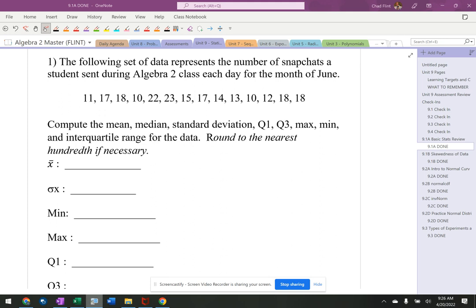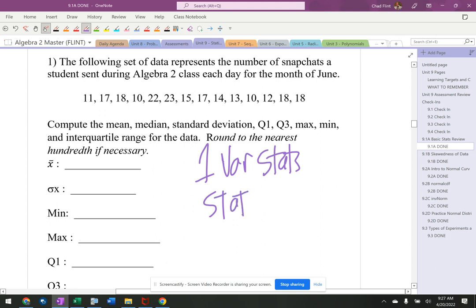All right, so following set of data represents blah, blah, blah. We want all this information. It's going to get it from one variable stats. Okay, so hit the stat button, and then edit.